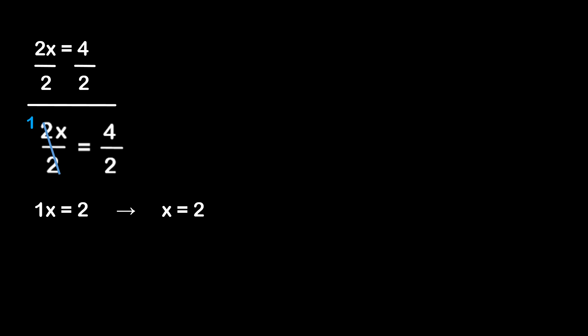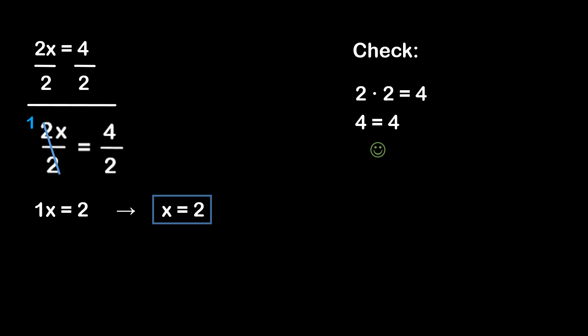We can do another check. We have x is equal to 2, so we plug that into the equation. We'll have 2 times 2 is equal to 4, or 4 is equal to 4. We know that statement makes sense because 4 is equal to 4.